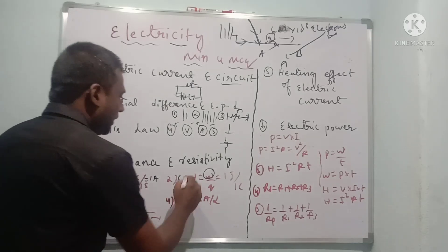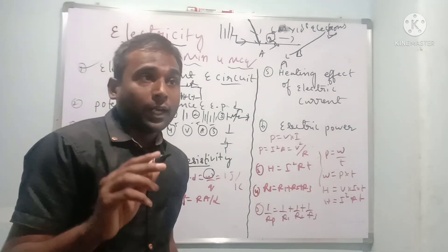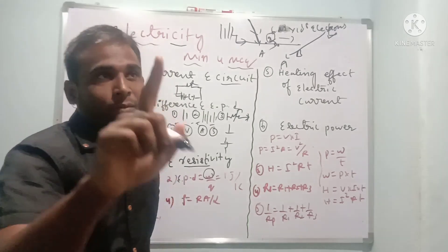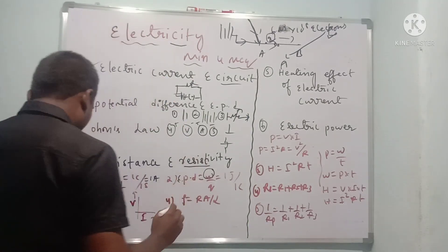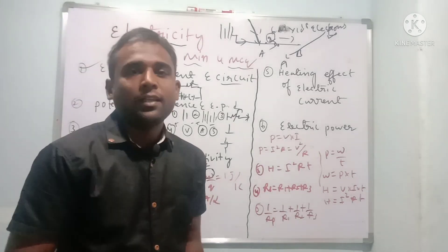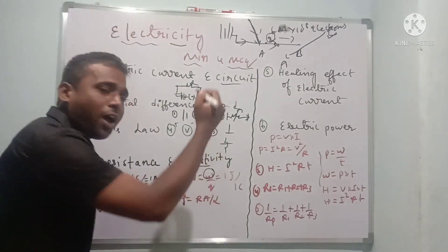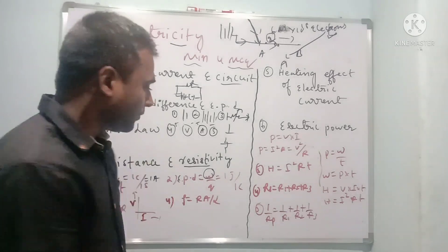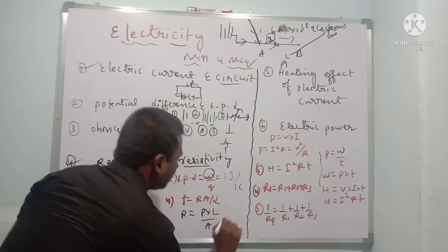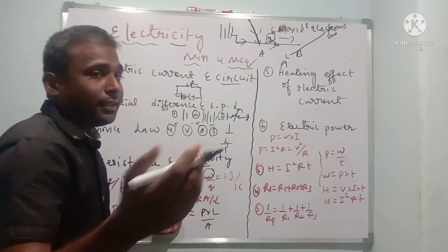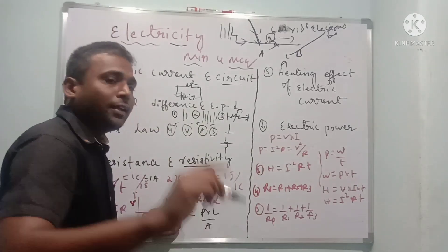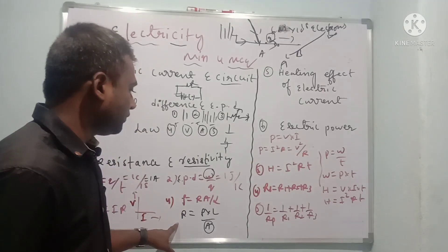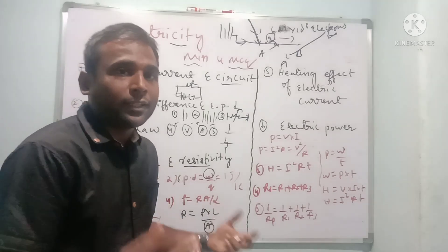The formula for resistivity is ρ = RA/L — remember it as 'RALA': R is resistance, A is area, L is length of the conductor, and rho (ρ) is resistivity. If we rearrange, R = ρL/A, so resistance is directly proportional to length — as length increases, resistance increases — and inversely proportional to area — if area increases, resistance decreases, because more charged particles move at greater speed.